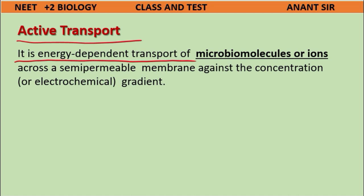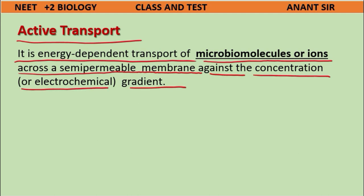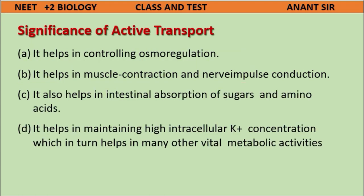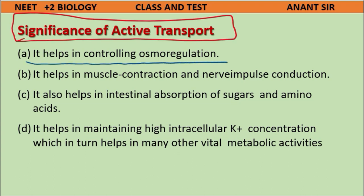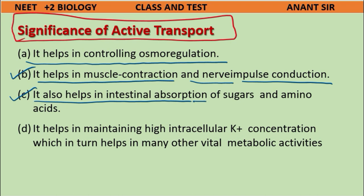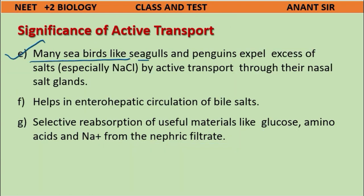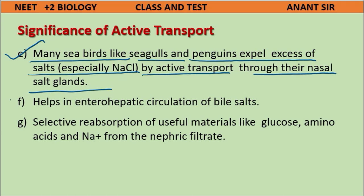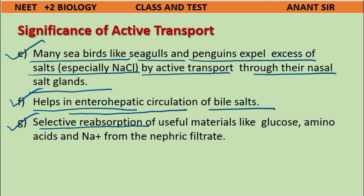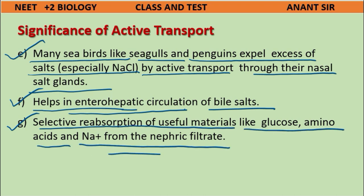Active transport is the energy-dependent transport of micromolecules or ions across a semi-permeable membrane, against the concentration or electrochemical gradient. Its significance: A) helps in osmoregulation; B) helps in muscle contraction and nerve impulse conduction; C) helps in intestinal absorption of sugars and amino acids; D) helps in maintaining high intracellular potassium (K⁺) concentration for vital metabolic activities; E) sea birds like seagulls and penguins expel excess sodium chloride by active transport through their nasal salt glands; F) helps in intrahepatic circulation of bile salts; G) selective reabsorption of glucose, amino acids, and Na⁺ from nephric filtrate.